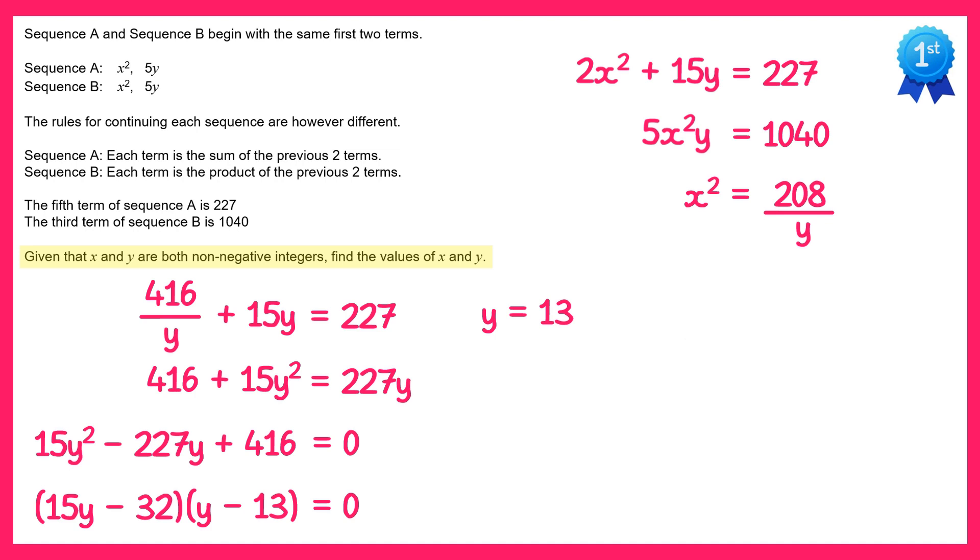Now we just need to find the x values corresponding to this y value, so what I'll do is take this rearranged form of the equation here and I'll write that out again, but I know that y is 13, so x squared equals 208 divide by 13.